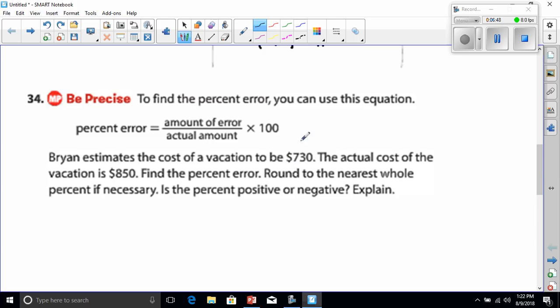It says the amount of error. Now that isn't telling you to put 730 on top, it's saying how much was he off by. Well if the actual amount was 850, we'll have to subtract 730 from it. That gives us 0, and 5 minus 3 is 2, 8 minus 7 is 1. So the error was 120 dollars.